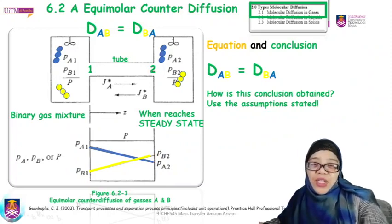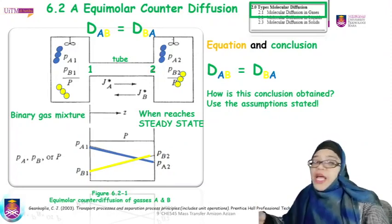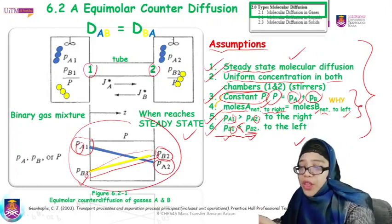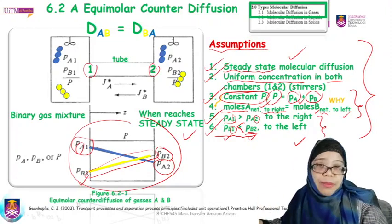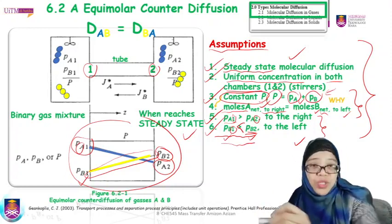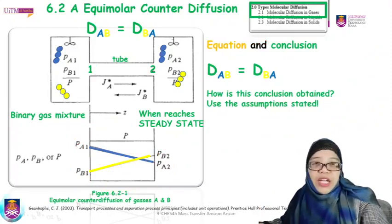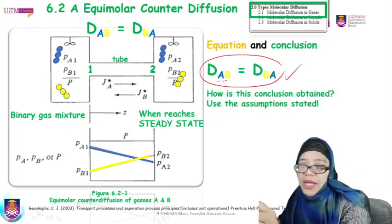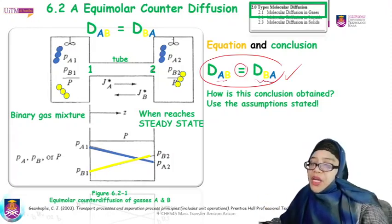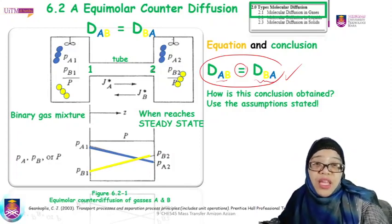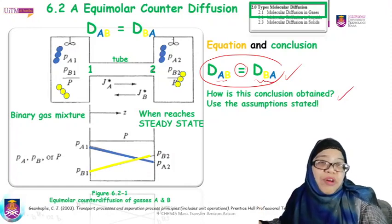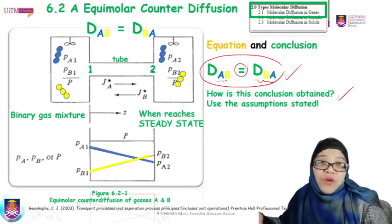Now, from the assumptions, we want to translate them into equations. With the theory and concepts based on the assumptions, we write these equations, including the total concentration equation. The final conclusion from equimolar counter diffusion is that DAB equals DBA. The question is how this conclusion is obtained — it must come from a derivation from equations, which in turn come from the assumptions.